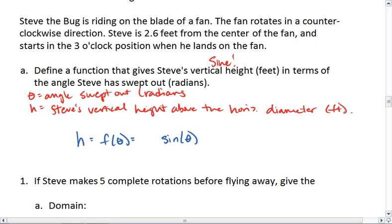But we want his vertical height in feet, not radius lengths. So what we have to do is take that number, however many radius lengths Steve is, and multiply it by the length of a radius. In this case, 2.6.